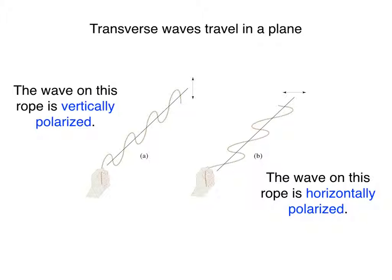Imagine holding a rope in your hand and then moving your hand up and down vertically, causing transverse waves to travel down the rope. As crests and troughs move along the rope, each particle of the rope moves up and down vertically as waves pass. The entire rope is all within one plane and that plane is oriented vertically. We say that the wave you are generating is vertically polarized.